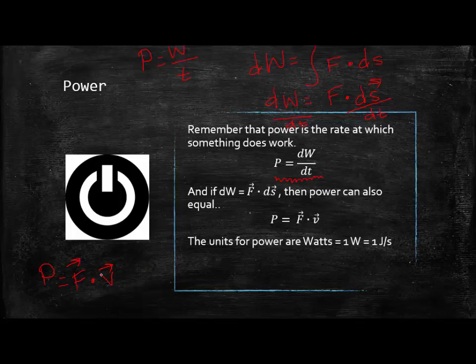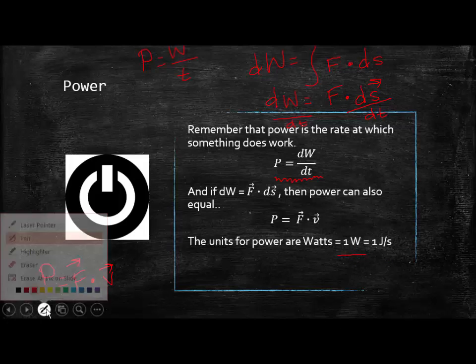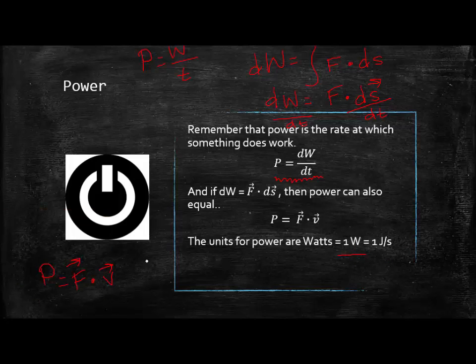Now, of course, if these two things are going in the same direction, then you would just multiply the force by the speed. The units for power are watts, and one watt is equal to one joule per second. We also have another unit of power that is called a horsepower, and one horsepower is, I believe the unit conversion is 746 watts.